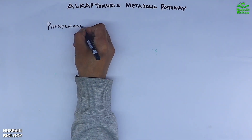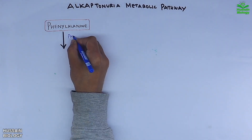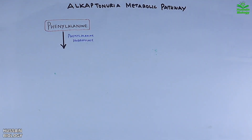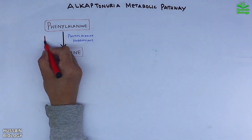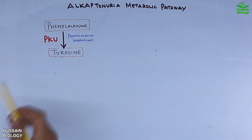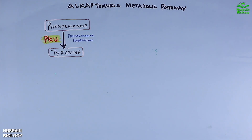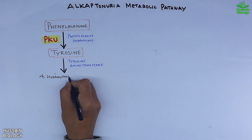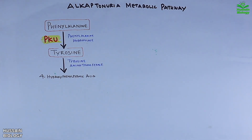The pathway starts with phenylalanine amino acid, which is acted upon by phenylalanine hydroxylase enzyme and converted to tyrosine. If phenylalanine hydroxylase is missing, that condition leads to PKU — phenylketonuria — which we have already discussed.